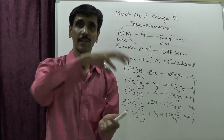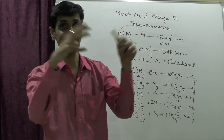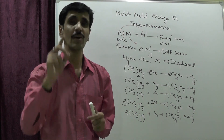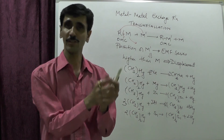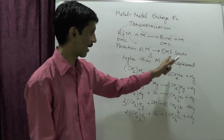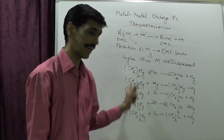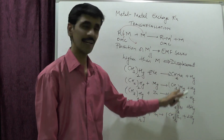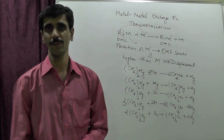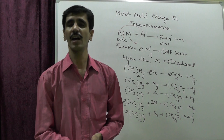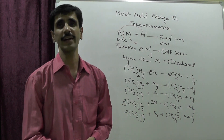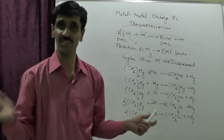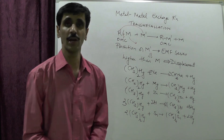That alkyl mercury compound can once again be treated with various electropositive metals via the oxidative addition method to give other organometallic compounds. This completes the discussion of transmethylation, also known as metal-metal exchange or metal-metal displacement reactions. I hope you have understood this very well.